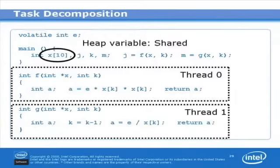Again, like the variable e, if you examine the source code of the two functions, you'll notice that x is read-only, and so we don't need to coordinate or synchronize the execution of the threads to make sure that we get the right values in or out of that x shared array.